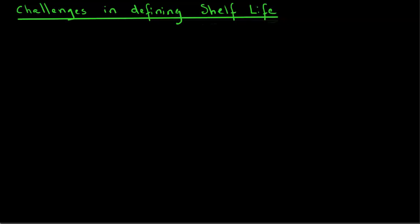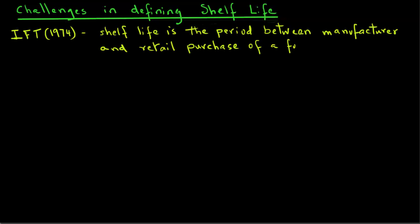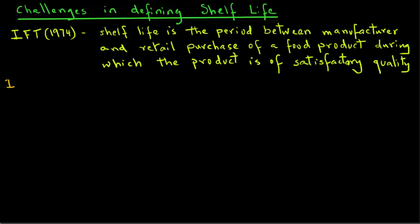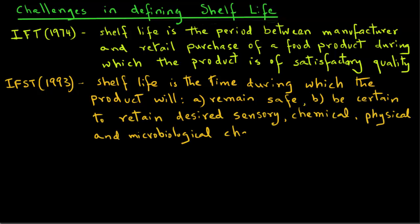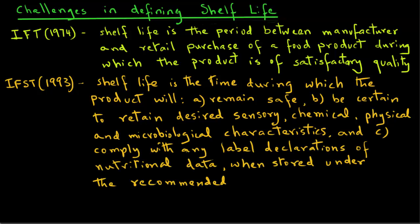So, what are some of the challenges in defining shelf life of foods? A definition by the Institute of Food Technologies from 1974 notes that shelf life is the period between manufacture and retail purchase of a food product during which the product is of satisfactory quality. The Institute of Food Science and Technology, IFST, also in 1993, suggested that shelf life is defined as the time during which the product will: a) remain safe, b) retain desired sensory, chemical, physical, and microbiological characteristics, and c) comply with any label declaration of nutritional data when stored under recommended conditions.